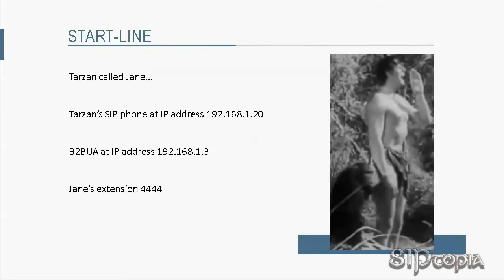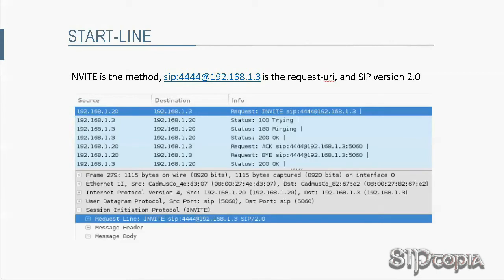The sample call between Tarzan and Jane can be used as an example. The first screenshot is the INVITE request from Tarzan's SIP phone at IP address 192.168.1.20, sent to the Asterisk Now PBX at IP address 192.168.1.3, in hopes of reaching Jane's extension 4444. The request line uses INVITE as the method, SIP:4444@192.168.1.3 as the request URI, and SIP version 2.0.